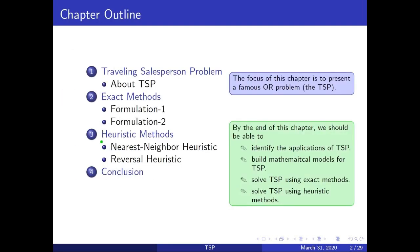The idea in the nearest neighbor heuristic is to start from a home city, then visit the next nearest city, and from that city you visit the next unvisited nearest city, and you follow this chain until you come back to the home city. That is the idea in the nearest neighbor heuristic.